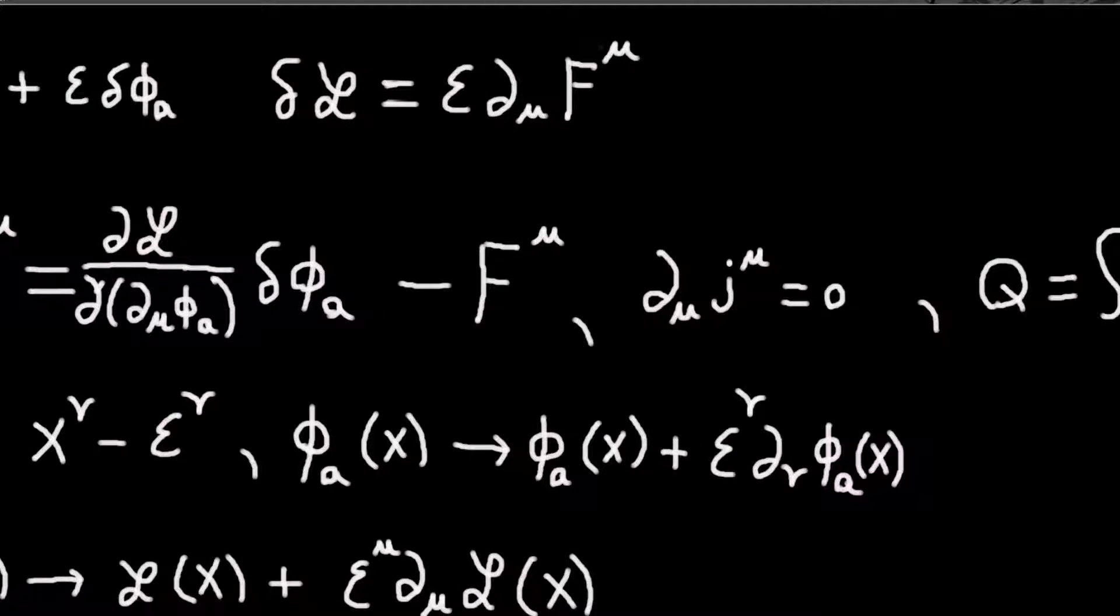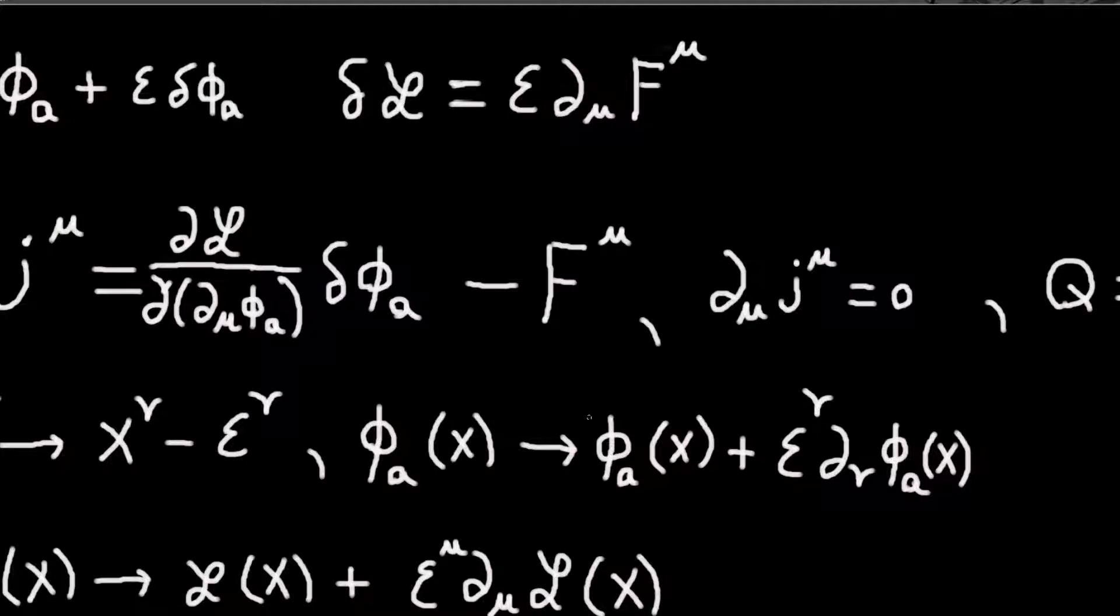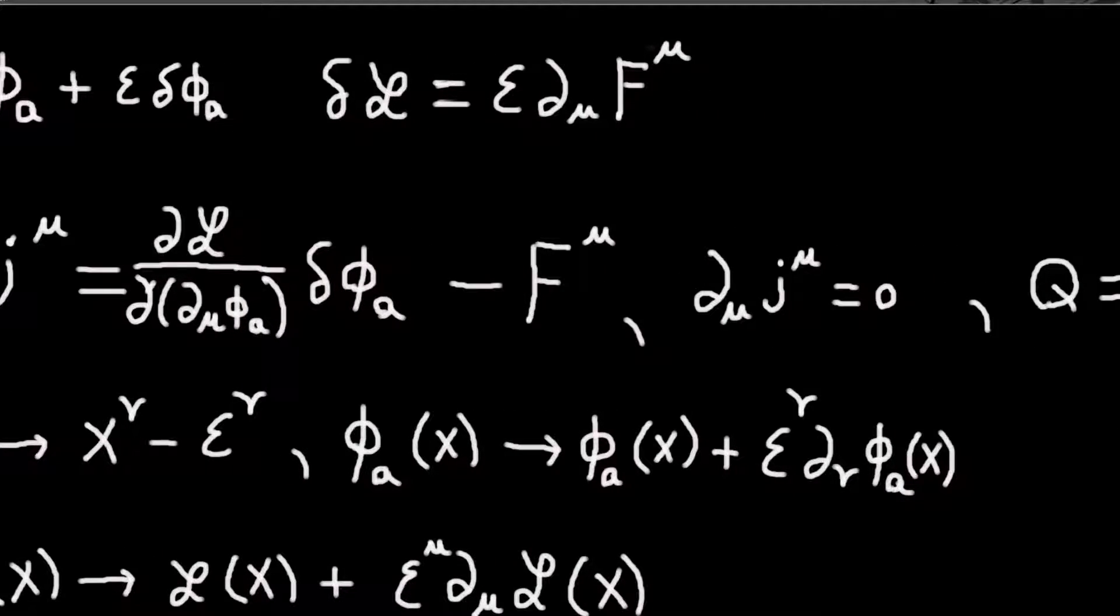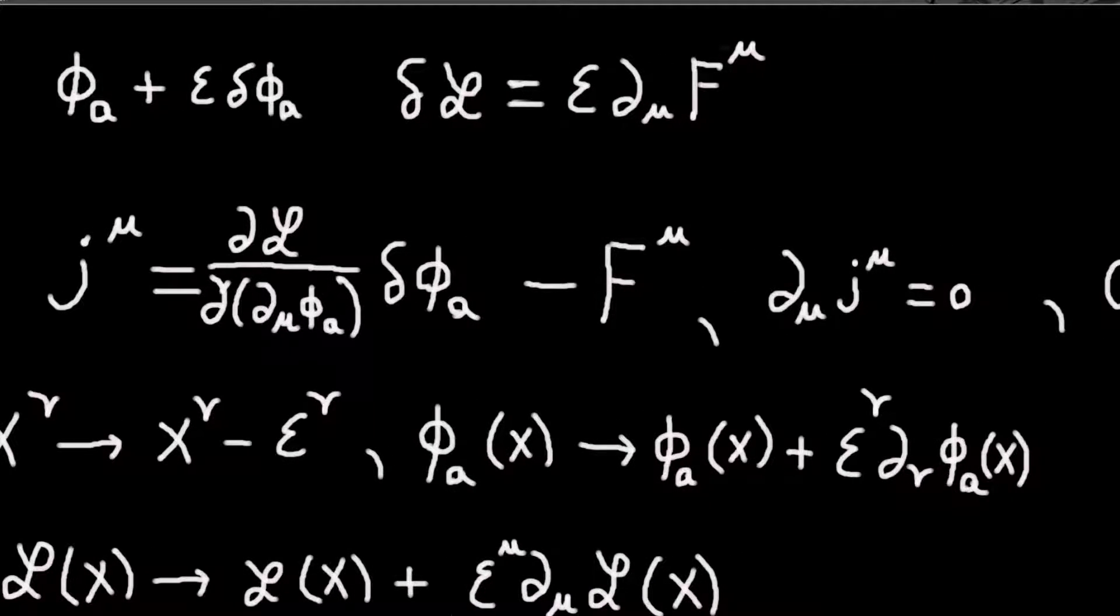So now that we know how the field changes, we know how the Lagrangian changes, we can write down our conserved current because we can read off what this variation in the field is from here, and we can read off what f is from the variation in the Lagrangian.